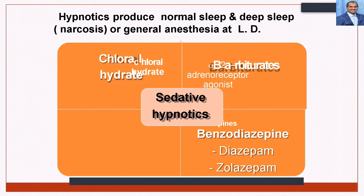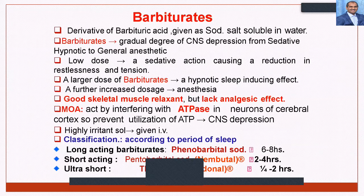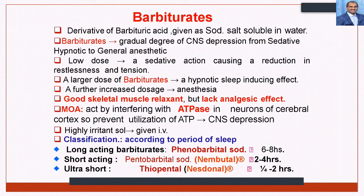Sedatives and hypnotics include chloral hydrate, barbiturates, benzodiazepines, and other drugs. Barbiturates are derived from barbituric acid, given as sodium barbiturates soluble in water. They cause a gradual degree of CNS depression from sedation and hypnosis to general anesthesia. Larger doses produce hypnosis; higher doses cause anesthesia. They cause good muscle relaxation but lack analgesic effect. Mechanism of action involves interference with ATP in cerebral cortex neurons and action on GABA receptors. Barbiturates are classified as long-acting, short-acting, and ultra-short-acting.